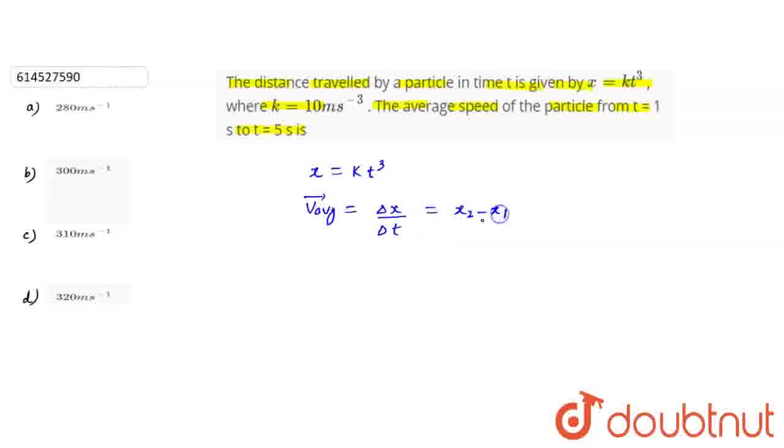Now see what the value is. x2 minus x1 divided over time taken to change the position, that is 5 minus 1, that is 4 seconds.